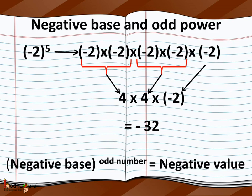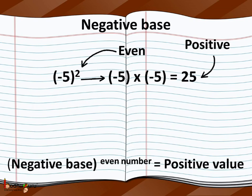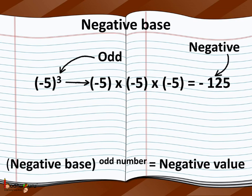So, remember children: the negative base to a power which is an odd number always results in a negative value. Let us take some more examples. Minus 5 to the power 2 — here, with the negative base, the exponent 2 is an even number, so the result has a positive value. That is, minus 5 multiplied by minus 5, which is equal to 25.